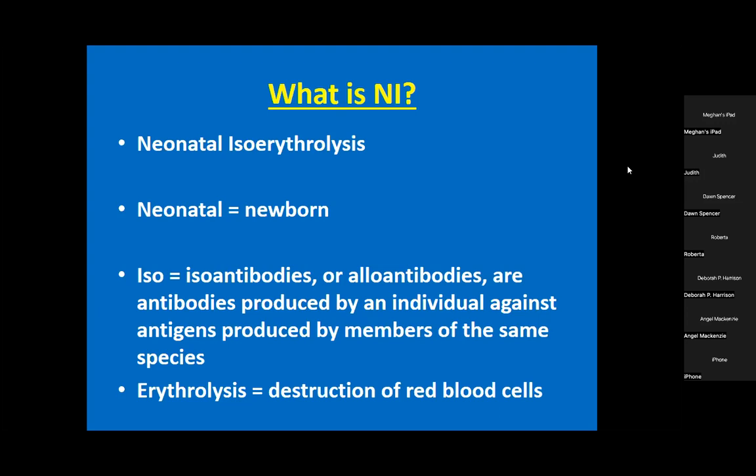In this case, that other member is the foal - so the mare is making antibodies against her foal's red blood cells. That's why it's called an isoantibody, or synonymously an alloantibody. These are antibodies produced against a member of the same species, not yourself. It's not a purposeful event - it's a mistake in the immune system.